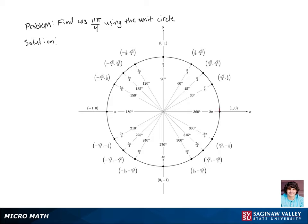Let's find cosine of 11 pi-fourths using the unit circle. So, 11 pi-fourths is a number that's greater than 2 pi.